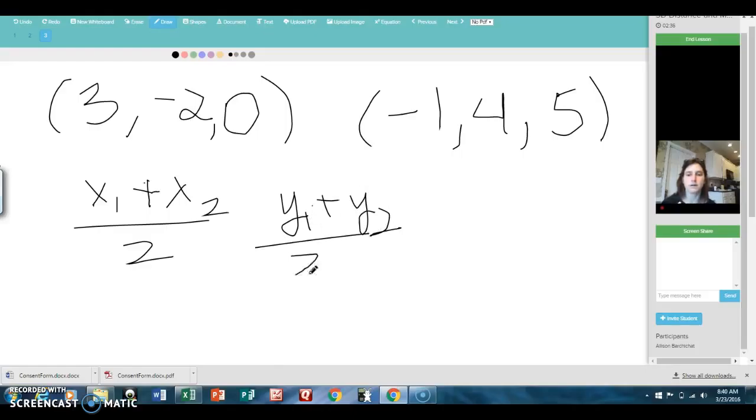There's a 1 here. And we add up the z values, divide by 2. That one got a little messy, but I think you get the idea. And then this creates a new ordered triple. And that will be our midpoint.